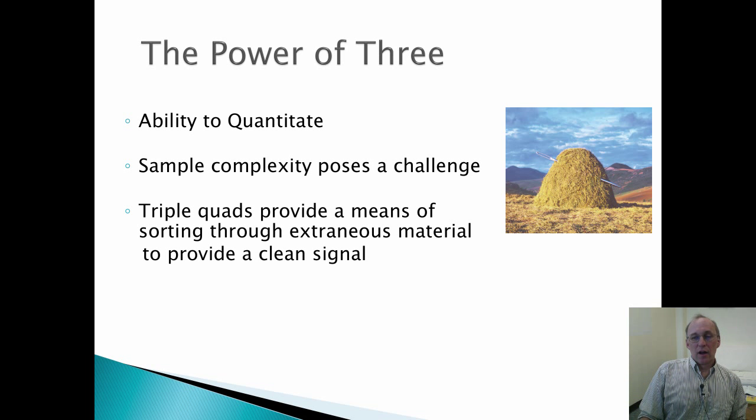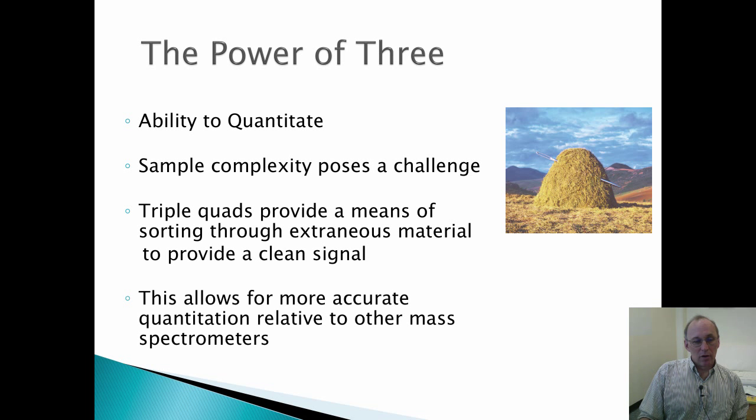Triple-quads provide a means of sorting through all the extraneous material and allowing us to get at only the compounds of interest that we wish to measure and provide a nice, clean signal with which to quantitate. This will allow for much more accurate quantitation, more confident quantitation, and they do the job better than other mass spectrometers on the market.